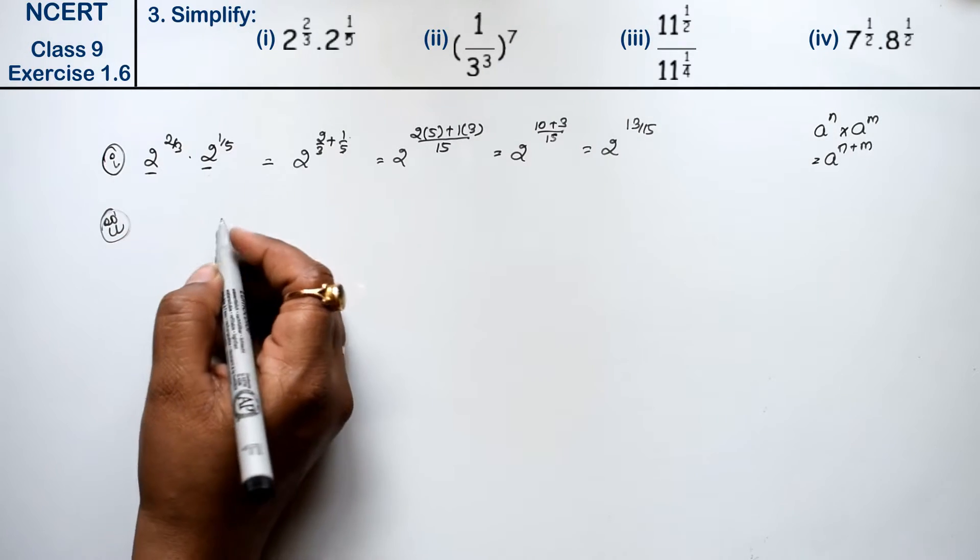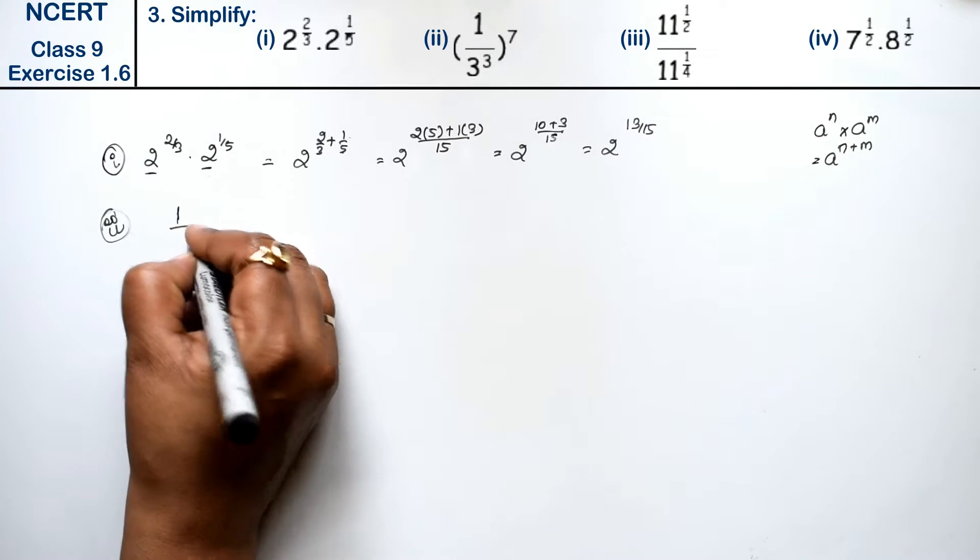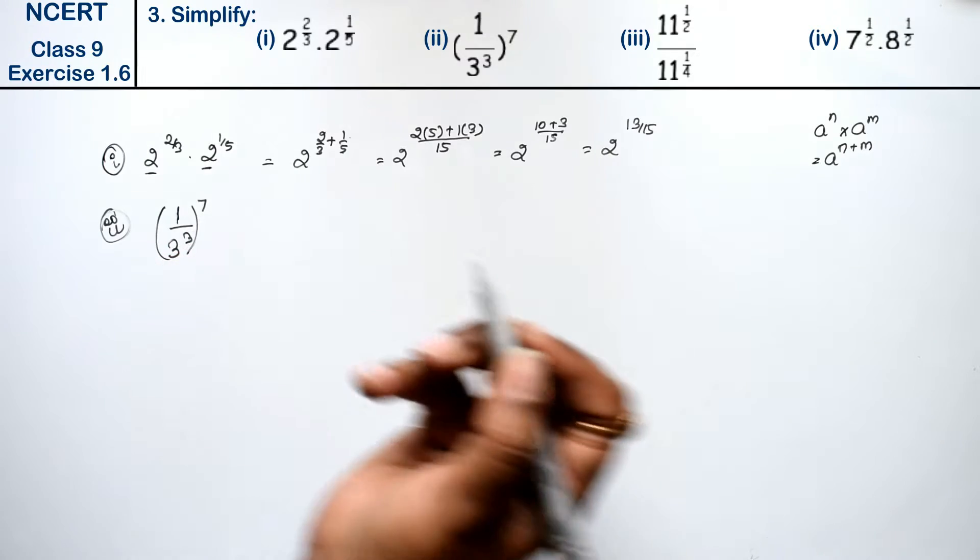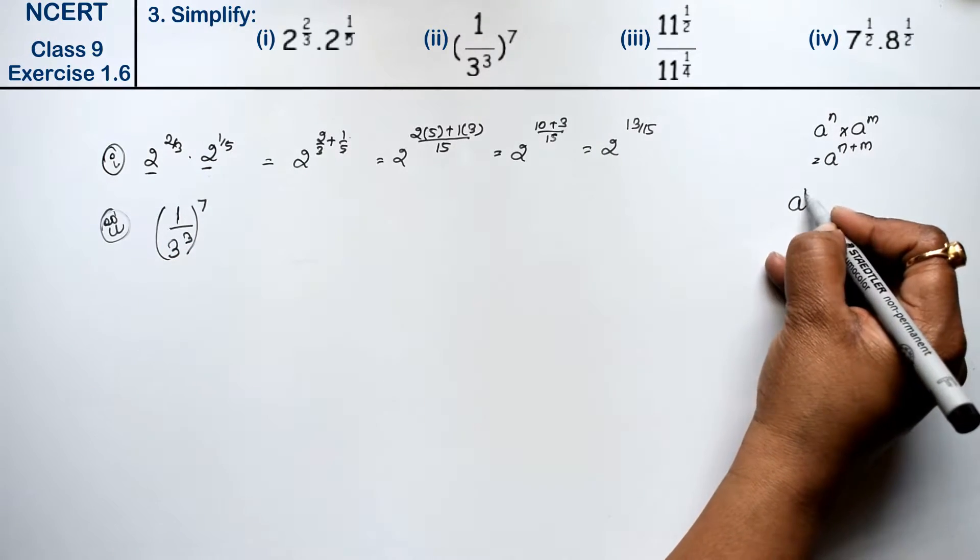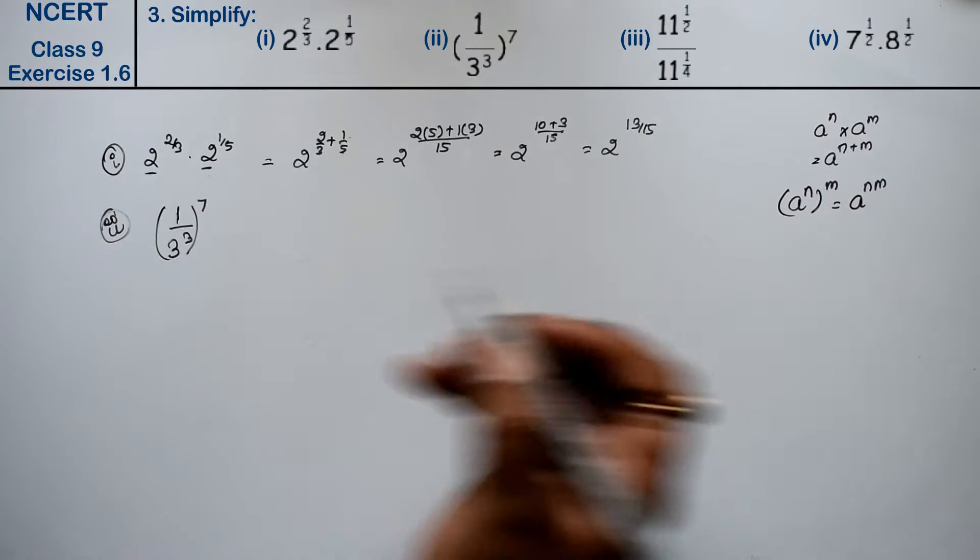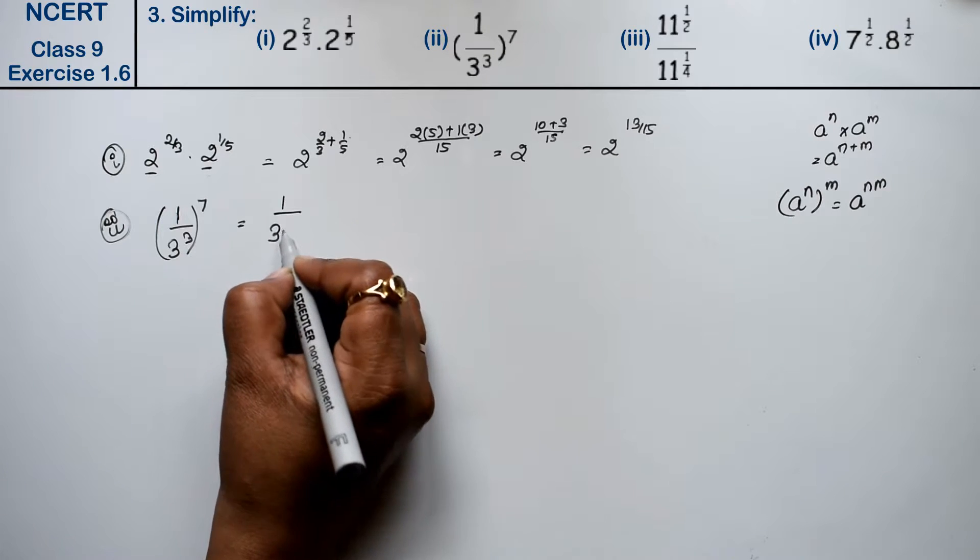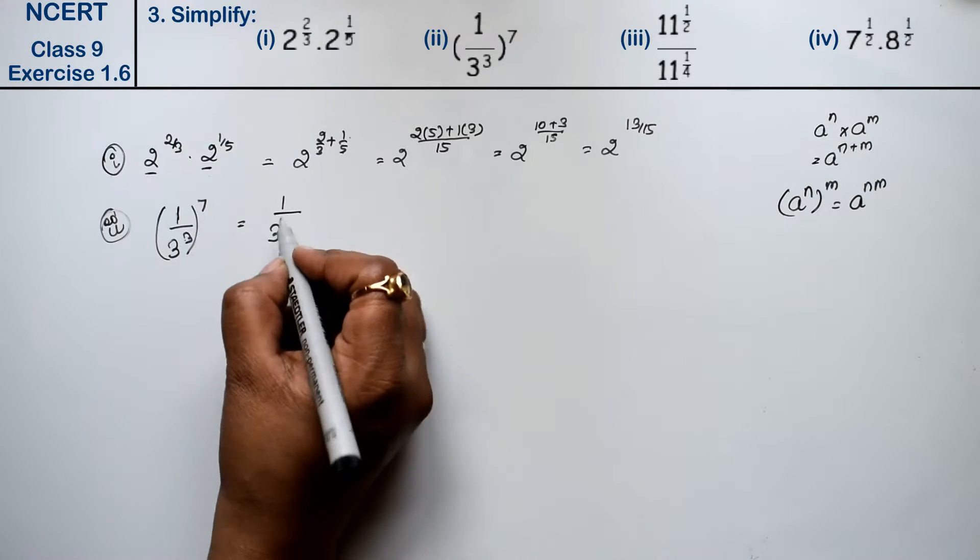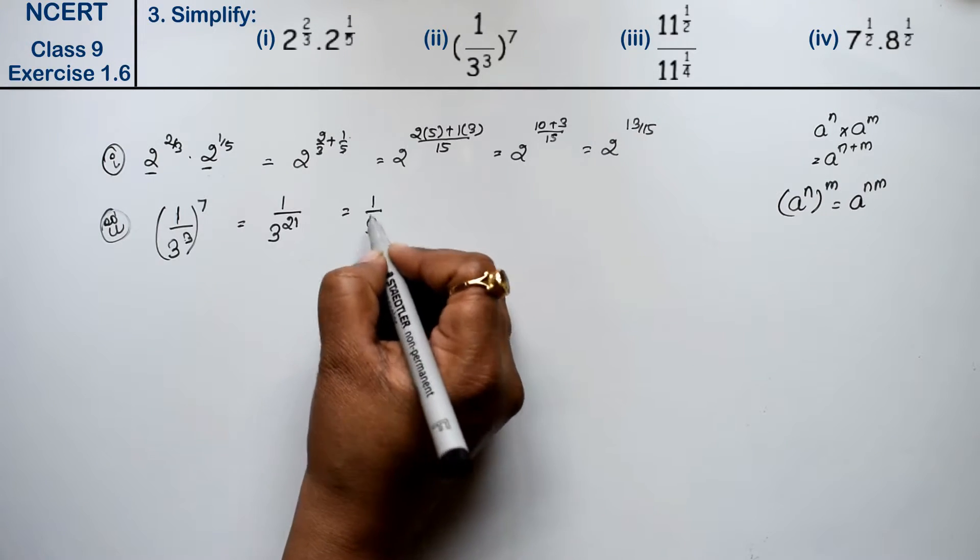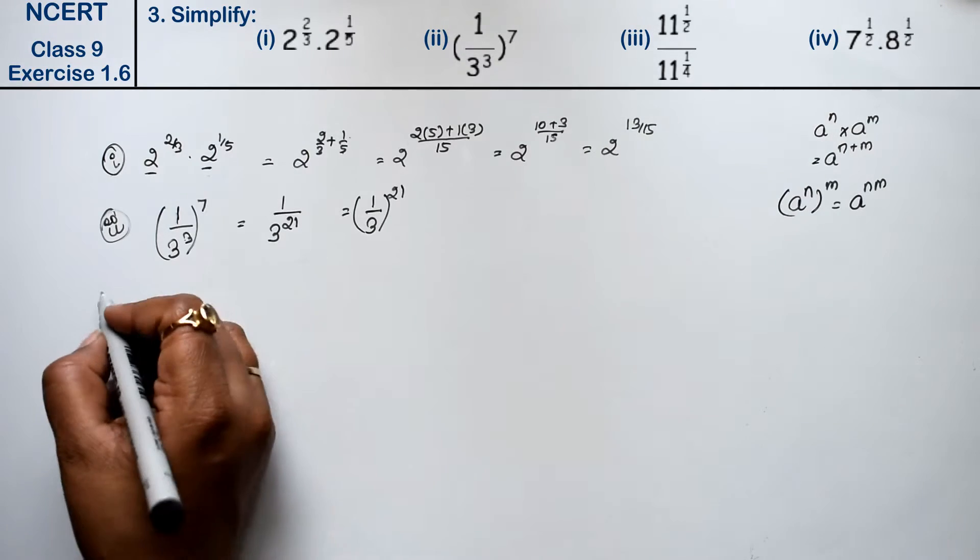Let's do second part. Second part is 1 upon 3 to the power 3 whole 7. When it's like this, A to the power n bracket m, we can write it as A to the power nm. So what do we get? 1 to the power 1 upon 3 to the power 7, threes are 21. Or we can say that 1 upon 3 to the power 21, because 1 to the power anything, the answer is 1.